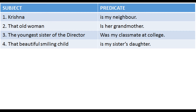Study the following sentences: Krishna is my neighbor. That old woman is a grandmother. The younger sister of the director was my classmate at college. That beautiful smiling child is my sister's daughter.